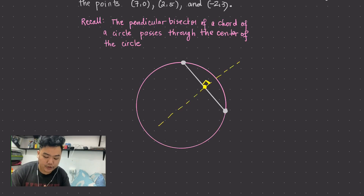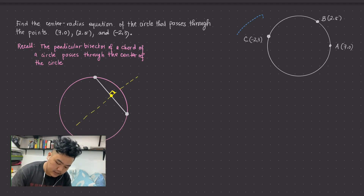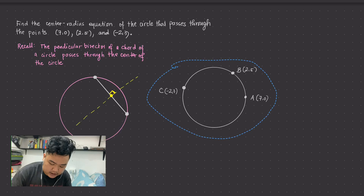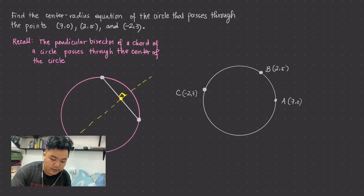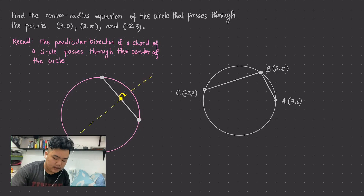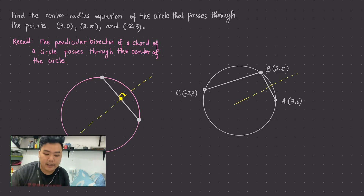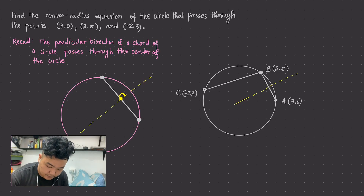Here's how we're going to use that to our problem. I have here the sketch of the problem. We're going to get two perpendicular bisectors — one for chord AB and one for chord BC. Let me draw the perpendicular bisector of AB in yellow, and the perpendicular bisector of CB in pink.